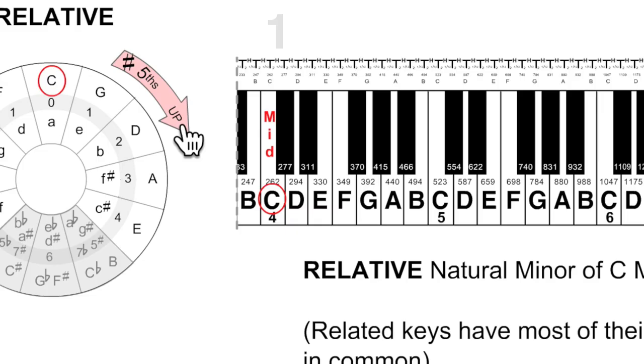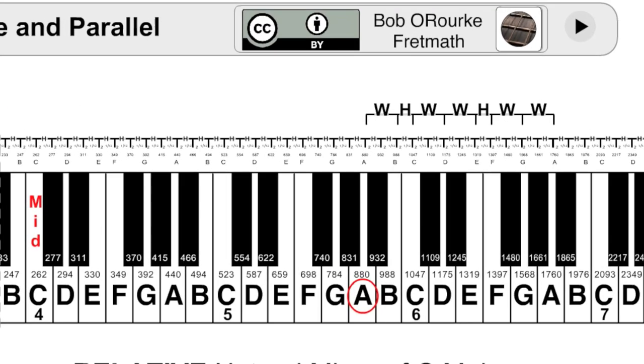Here is that count again. Remember we're not counting the number of sharps or the number of intervals, we're counting just the letter names. You start with C as one, G is two, D is three, A is four, and that's the relative minor of C.